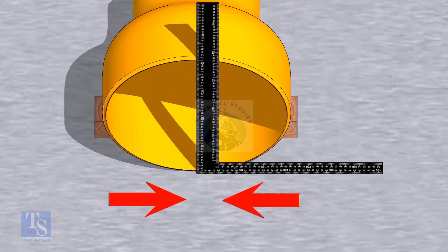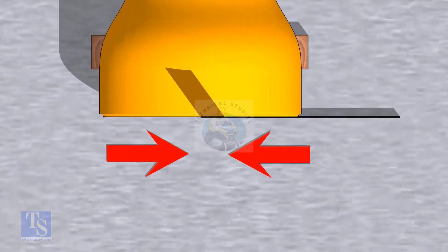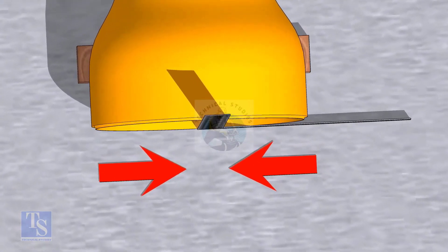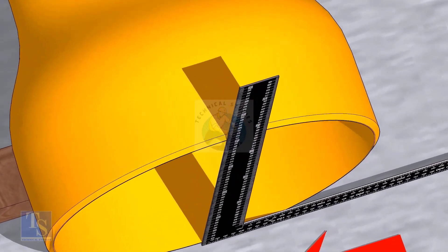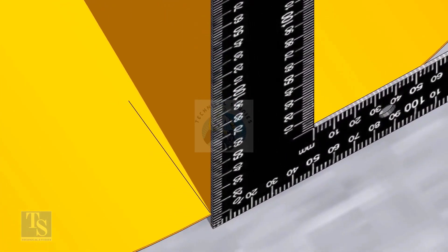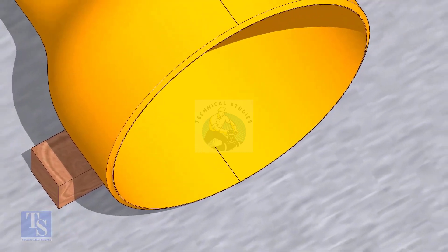Mark lines where the right angle touches the reducer as shown. Transfer this marking to the outer face later.